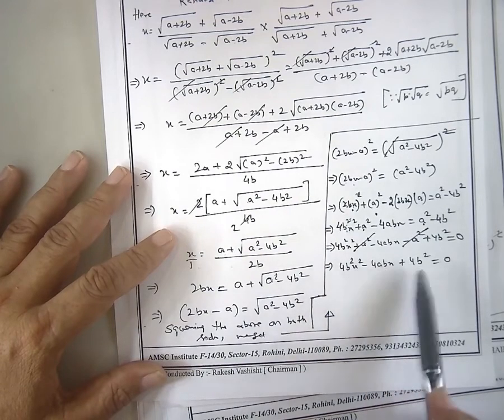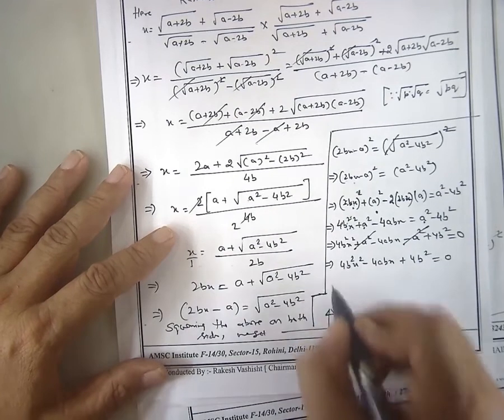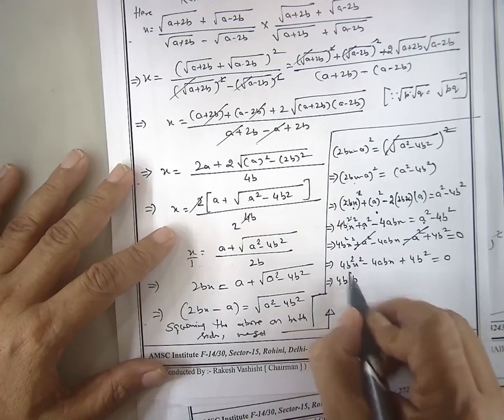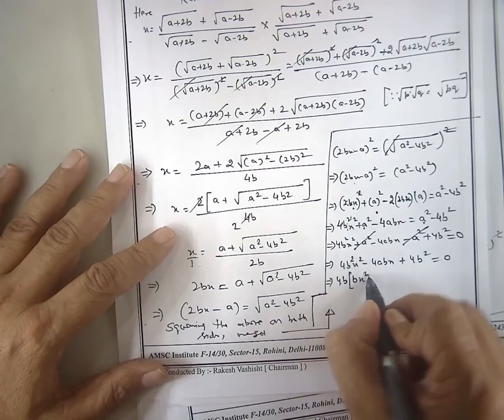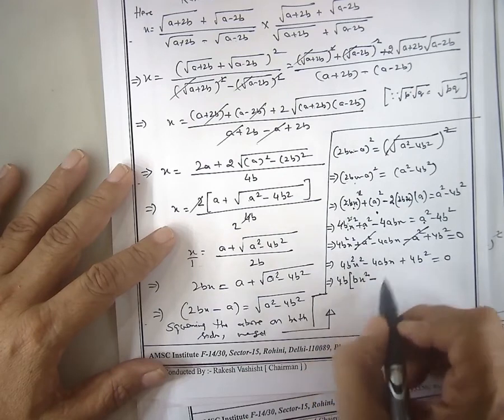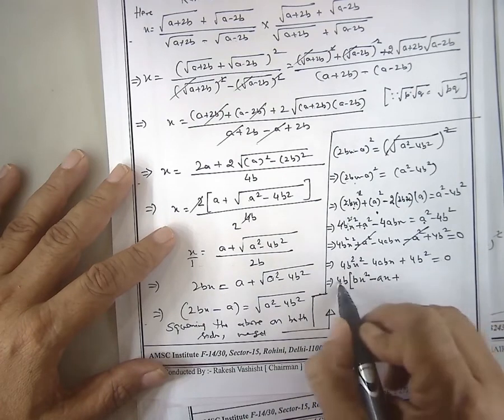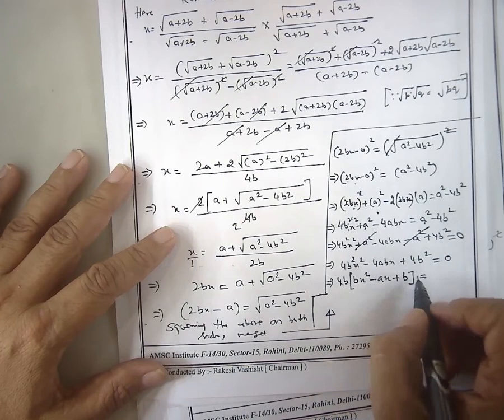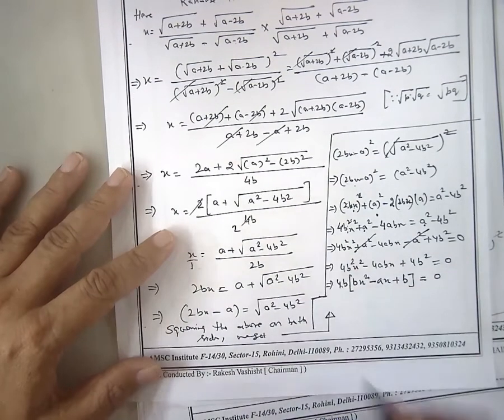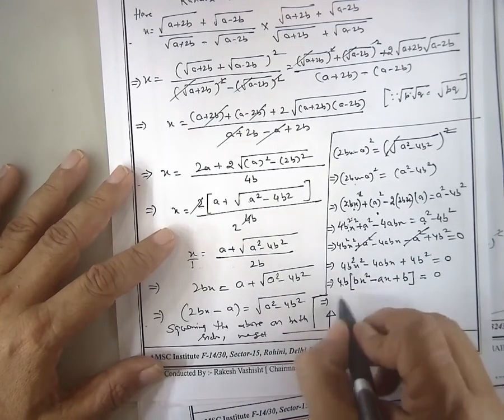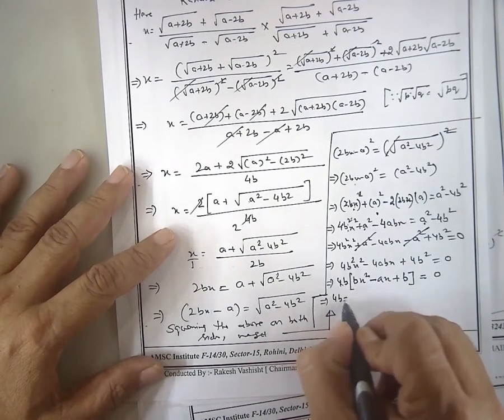Minus 4b. This equals this times this. For this to equal zero, either x squared minus x plus b equals 0, or 4b equals 0.